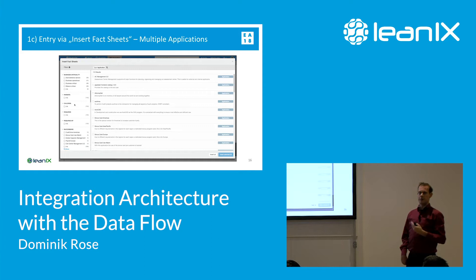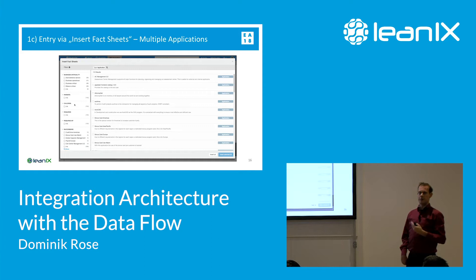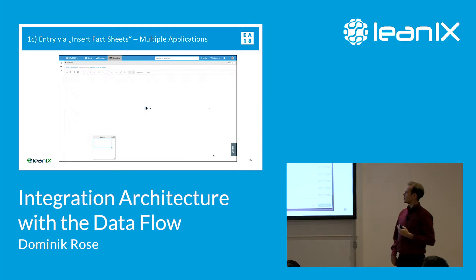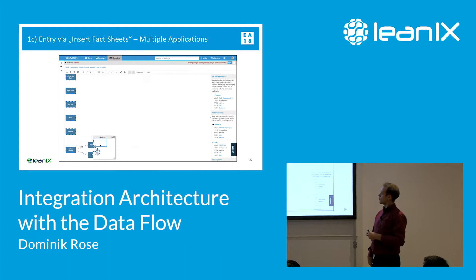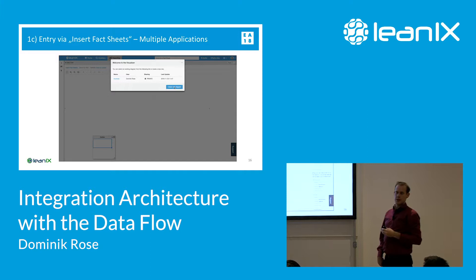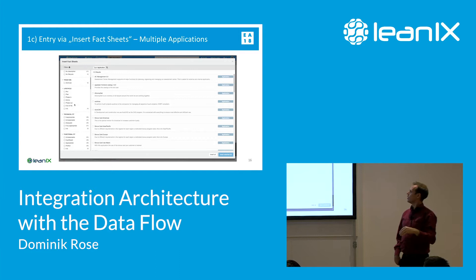The third opportunity to get started — and this is something we added this year — you can add multiple things at a time. You can say 'give me all applications that carry employees,' select them all with Ctrl+A, right-click, say 'show interfaces,' and with a couple of clicks you have all interfaces for all those applications on the canvas.